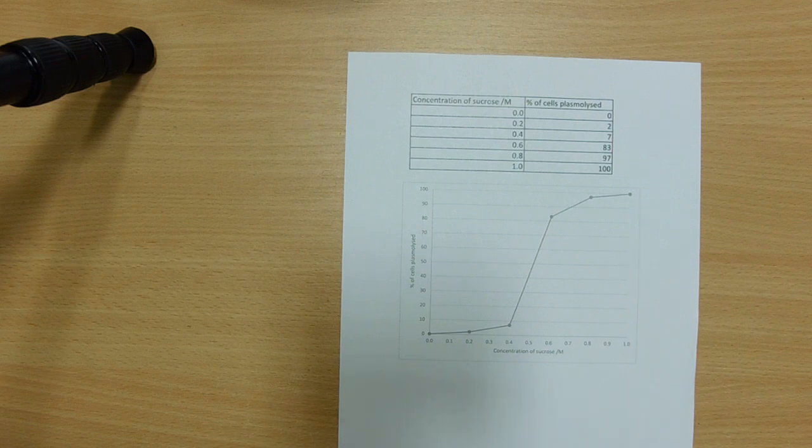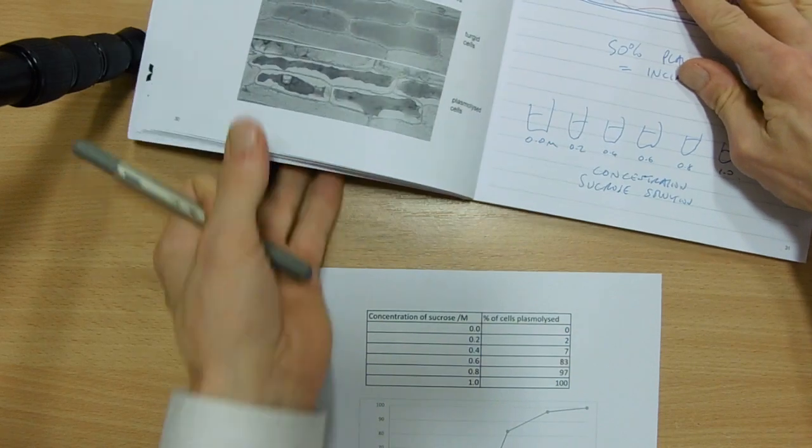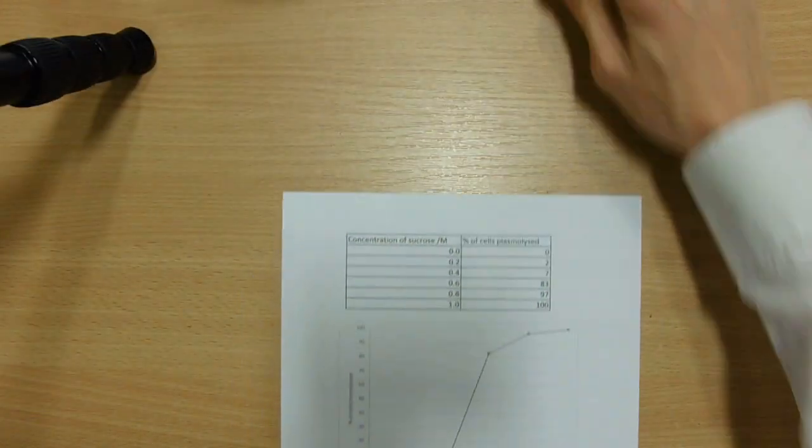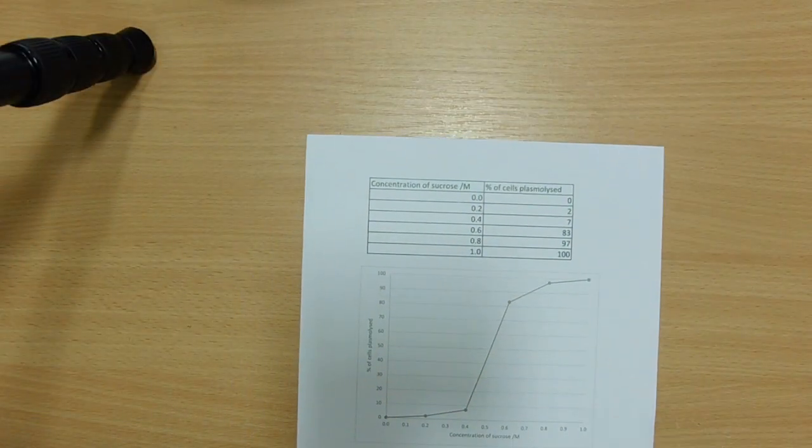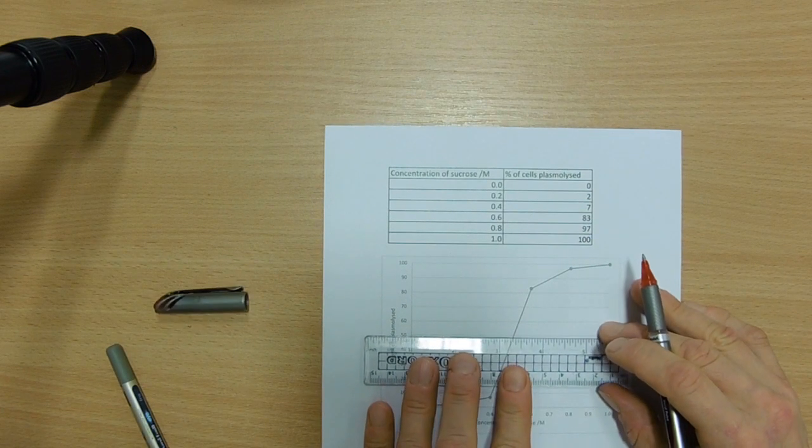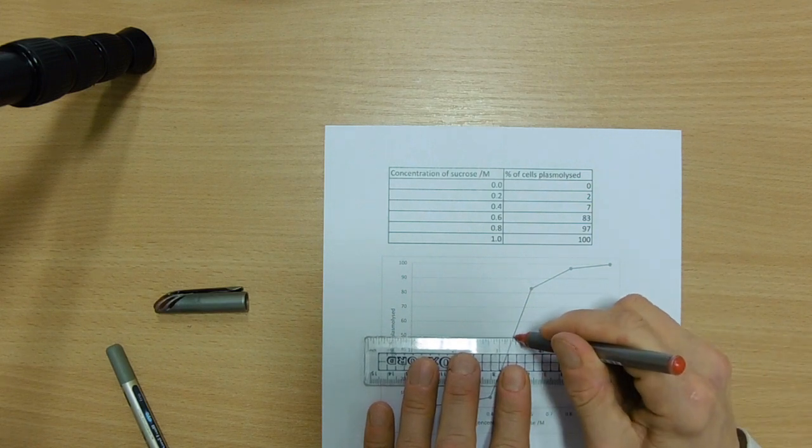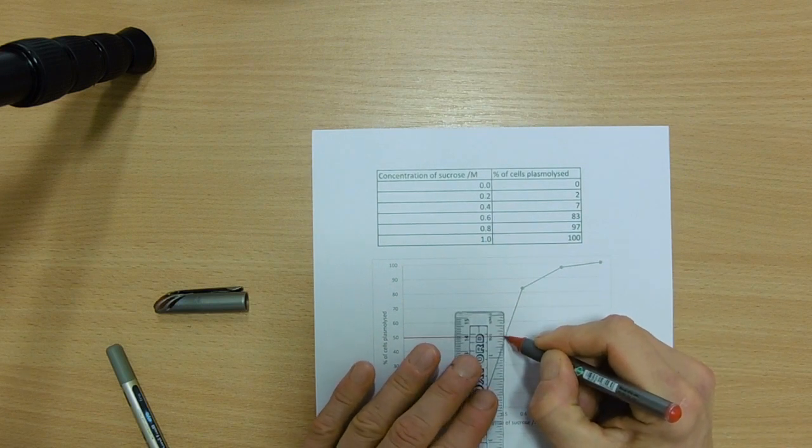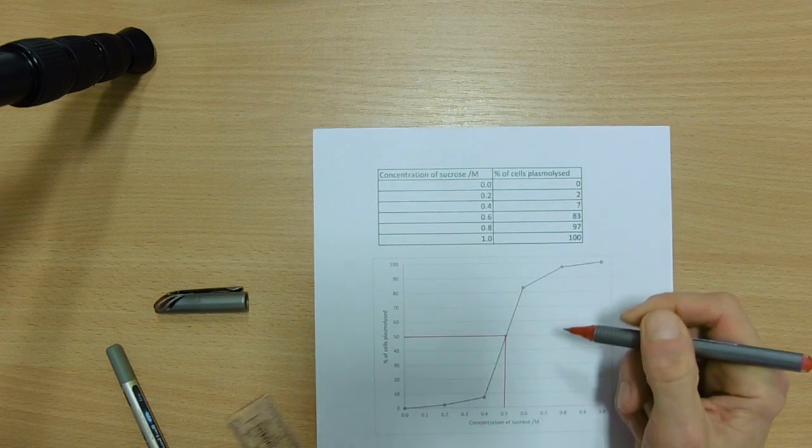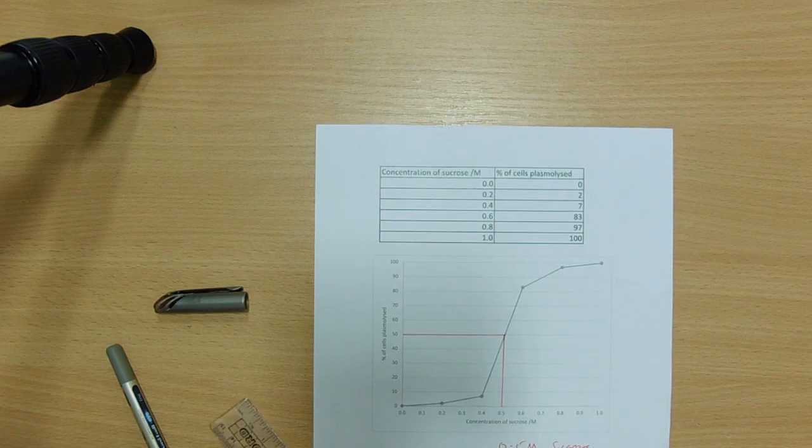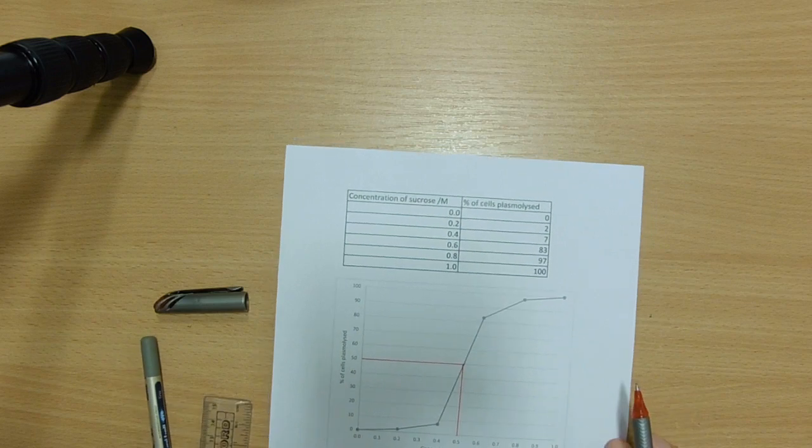We need to remember our definition. Our definition was 50% plasmolysis. And that's going to be our incipient plasmolysis, our solute potential. So we need to, on this graph, draw a line across from 50%. So a line across from 50%. And down, down here. Handily for us, that's going to be 0.5 molar sucrose. So that is the concentration where we've got incipient plasmolysis.